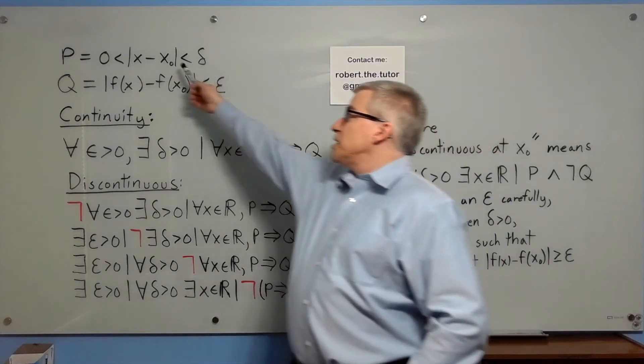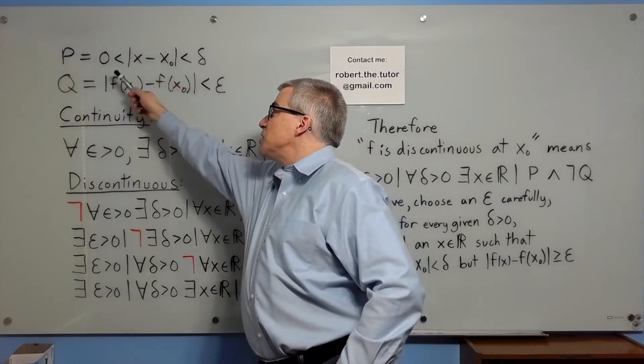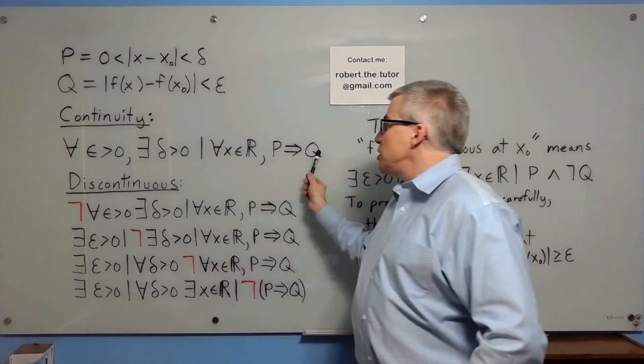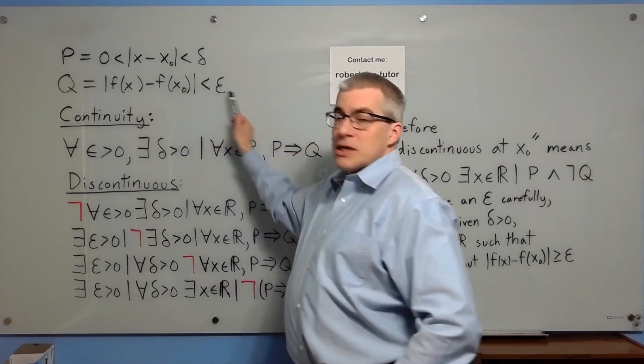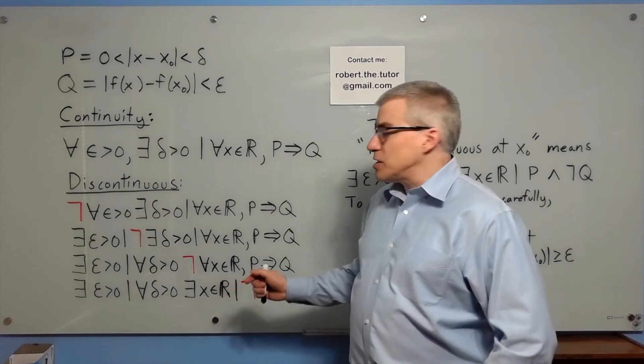where p is saying that x minus x zero is between zero and delta, and q is saying that the absolute value of f of x minus f of x zero is less than epsilon. That's the definition of continuity.